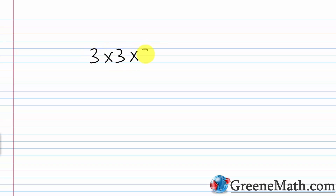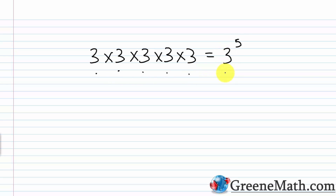Before we get into the main content, let's briefly review exponents. Recall that we're using exponents to conveniently notate repeated multiplication of the same number. For example, something like 3 times 3 times 3 times 3 times 3 — I have 5 factors of 3, so I can write this as 3 to the fifth power. The number being multiplied by itself is the base; that's 3 in this case. The smaller number in the top right-hand corner, this 5, is the exponent, telling me I have 5 factors of 3.